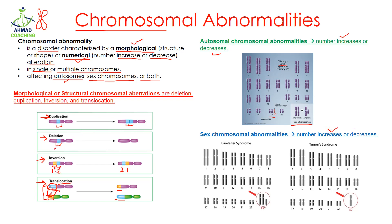Similarly, sex chromosomal abnormalities also occur in which the number may increase or decrease. In the case of Klinefelter syndrome, we can see that there is an X and X chromosome, but along with this there is an extra Y chromosome. So there is an extra sex chromosome, which is why we observe this chromosomal abnormality known as Klinefelter syndrome.